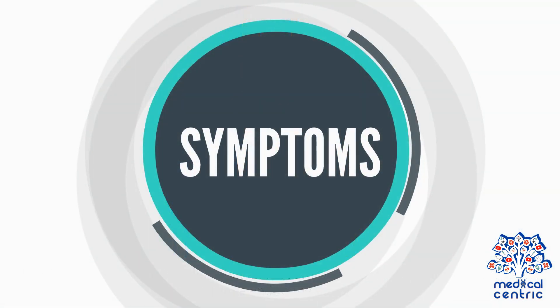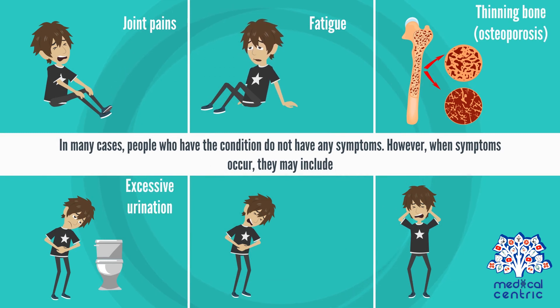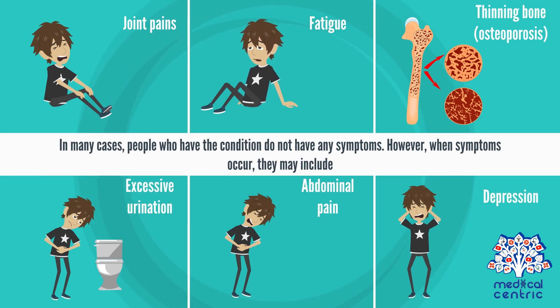An increased risk also occurs in people who have inherited certain disorders that affect several glands throughout the body, such as multiple endocrine neoplasia. In many cases, people who have the condition do not have any symptoms. However, when symptoms occur, they may include the following.